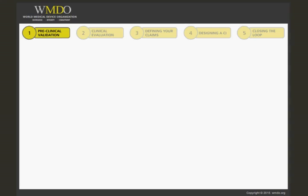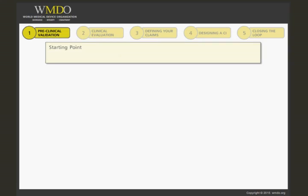In setting up your preclinical validation plan, you need to take into account the following criteria. First, your starting point is the risk analysis as well as the review of the essential requirements which devices need to comply with. Europe has a list of all the essential requirements a device needs to comply with, which can be used as a checklist.